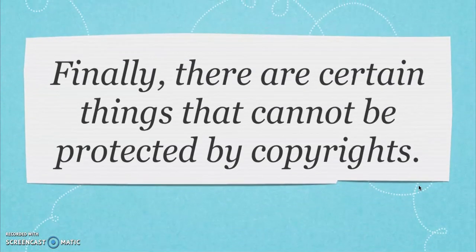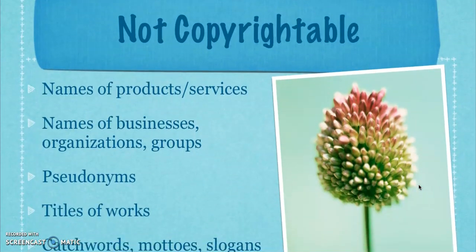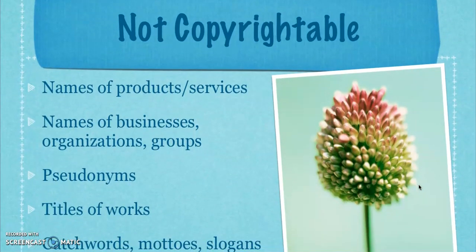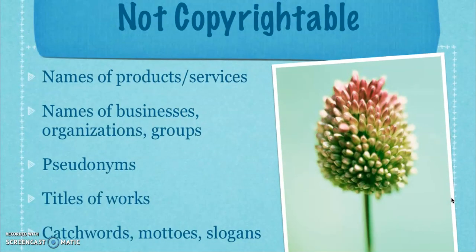There are certain things that cannot be protected by copyrights. As stated, there are copyrights, trademarks, and patents. The names of products and services are not copyrightable — that would be more like a trademark. Names of businesses, organizations, and groups are also trademarks. Pseudonyms cannot be copyrighted either.